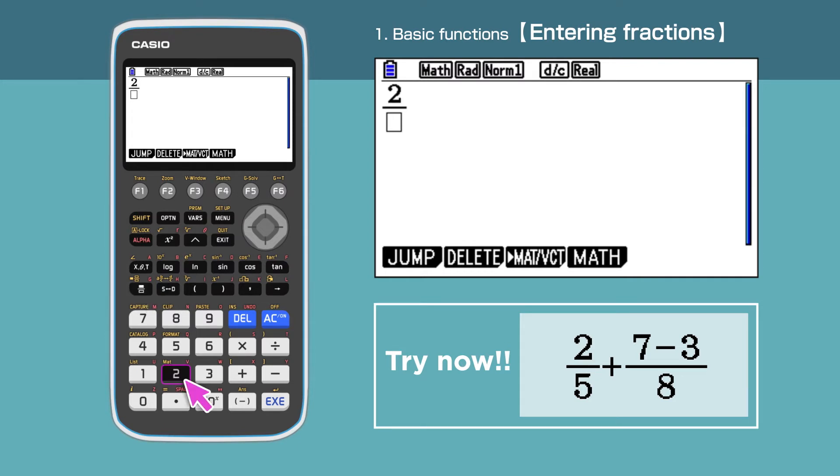Move the cursor next to the 2, then down to enter the denominator. Enter 5. Now the denominator is 5 and the fraction 2/5 is complete.